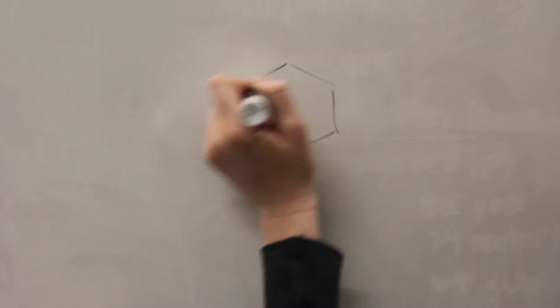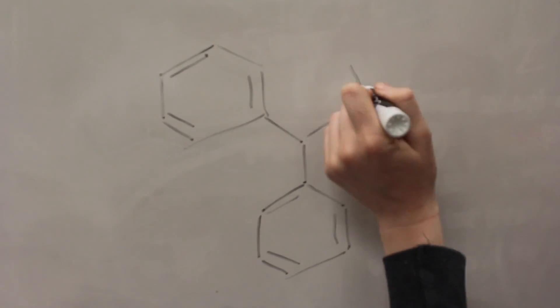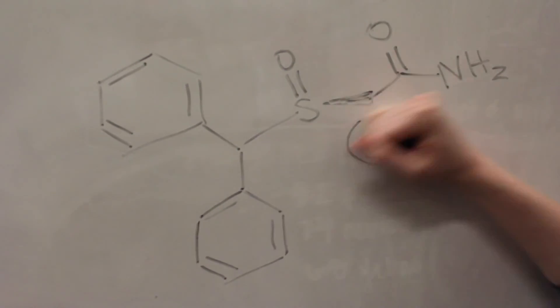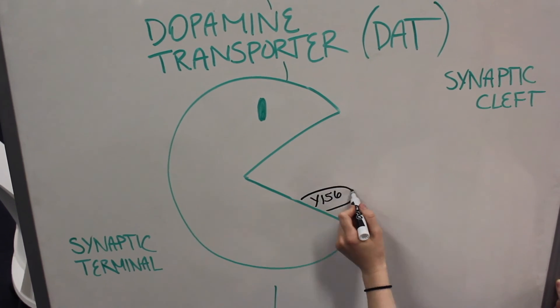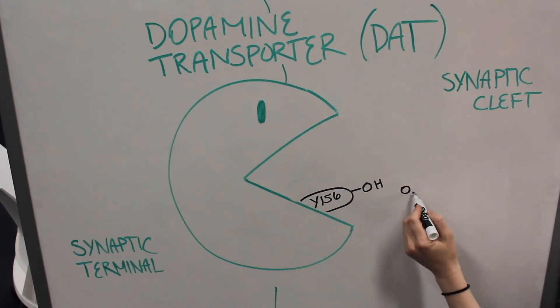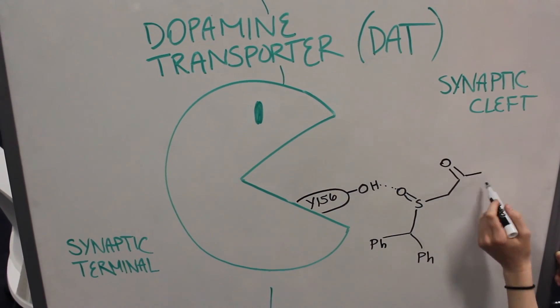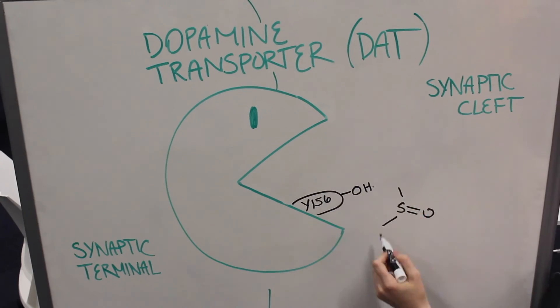Uniquely, modafinil's sulfoxide group exhibits chirality due to its lone pairs. Due to this chirality, modafinil is composed of two enantiomers, the S enantiomer and the R enantiomer. Interestingly enough, the enantiomers of modafinil are both active, but the R enantiomer lasts three times longer because its sulfoxide group is positioned toward a tyrosine-156 residue on the dopamine transporter.